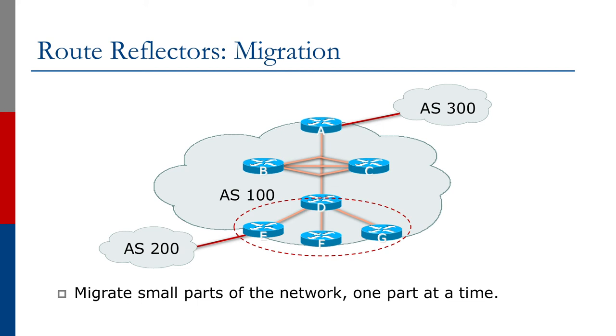On router D, E, F, and G are configured as route reflector clients, and the sessions are brought up. Once those sessions are running, the extra IBGP sessions that E, F, and G have with routers A, B, and C in the backbone can be removed. This migration can be done without breaking any connectivity in the network, though it is still recommended to perform it during a planned maintenance window rather than on a live network.